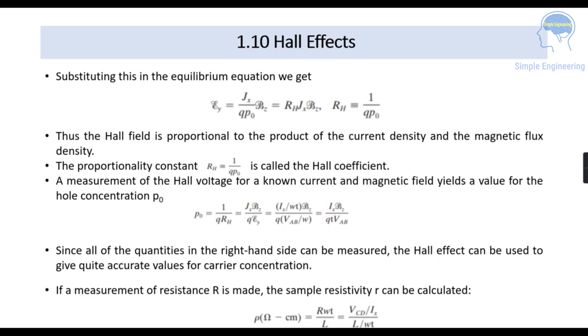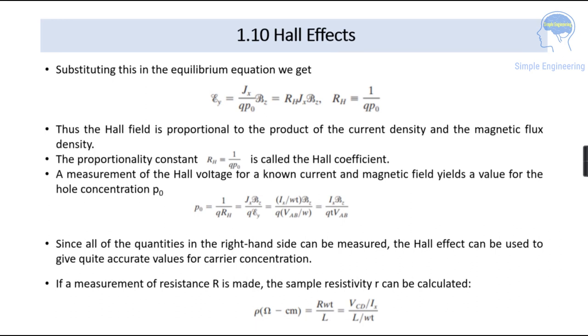So the measurement of the Hall voltage for a known current and magnetic field yields a value for the Hall concentration p0. So p0 means it is equal to 1 by q into Rh where Rh is our Hall coefficient. So this we can rearrange it as Jx that is in terms of current density and magnetic flux density. So it will be equal to Jx·Bz by q·εy. This we can rearrange it as in terms of current Ix by w·t into Bz by q into εy. We have taken in terms of Hall voltage that is Vab. So finally we will get p0 our Hall concentration will be equal to Ix·Bz by q·t·Vab.